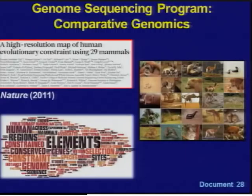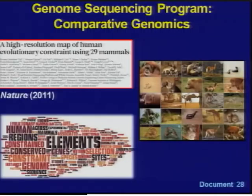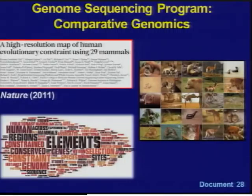A highlight from the genome sequencing program since the last council meeting is the recent Nature publication reporting the sequencing and comparative analysis of 29 eutherian genomes. The authors generated a high-resolution map of more than 3.5 million evolutionarily constrained elements encompassing about 4% of the human genome. The study used evolutionary signatures and comparisons with experimental data sets to suggest candidate functions for about 60% of the constrained bases. Overlap with disease-associated variants indicates these findings will be relevant for future studies of human biology, health, and disease. Data sets are publicly available at the Broad Institute and UC Santa Cruz Genome Browser.